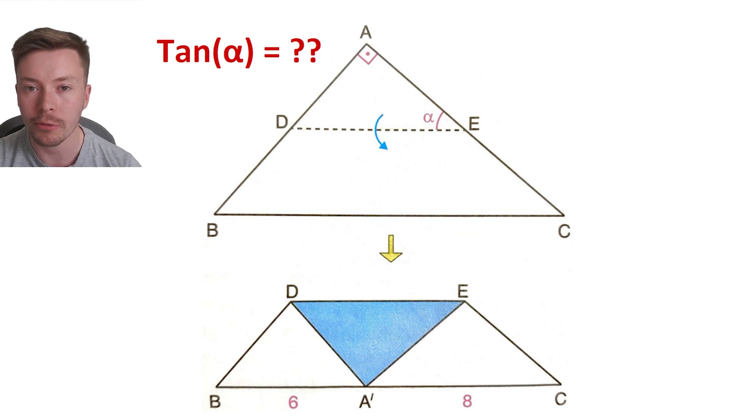Now the unique thing about this triangle is that the top, as you can see, can be flipped down and it directly meets the base of the triangle at a point A apostrophe. So can we work out, just by the two lengths on the bottom, which when you flip this top half of the triangle down we get lengths of six and eight, can we use those numbers to find a value for tan alpha?